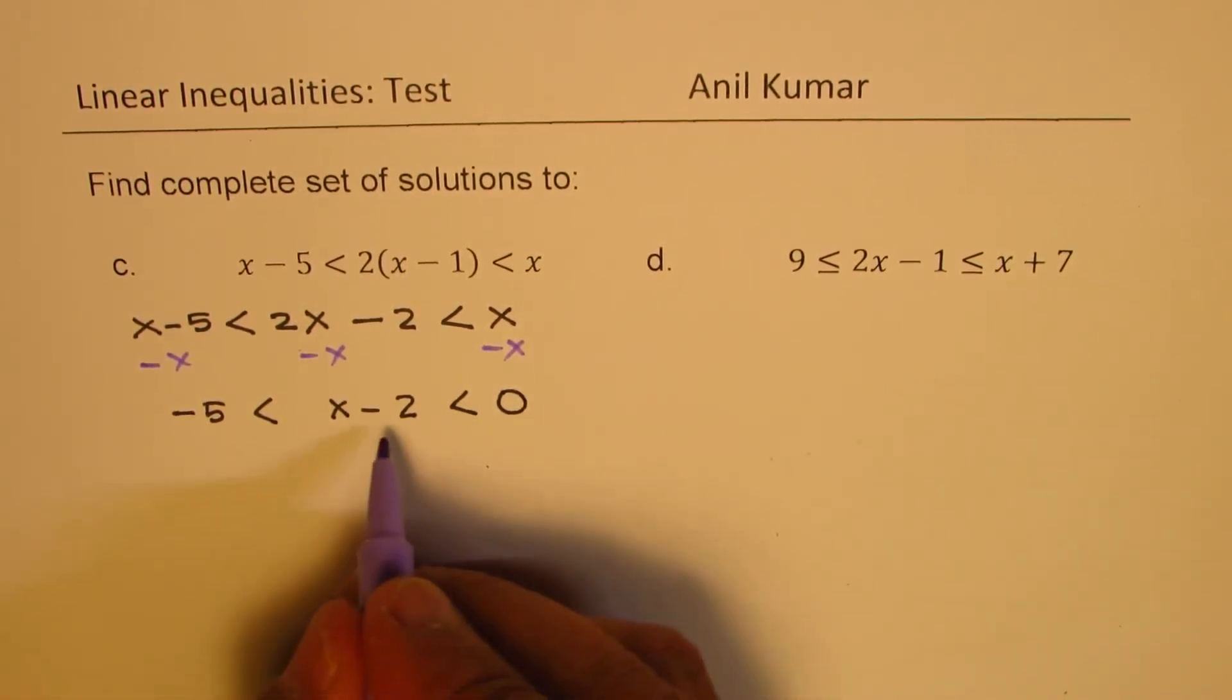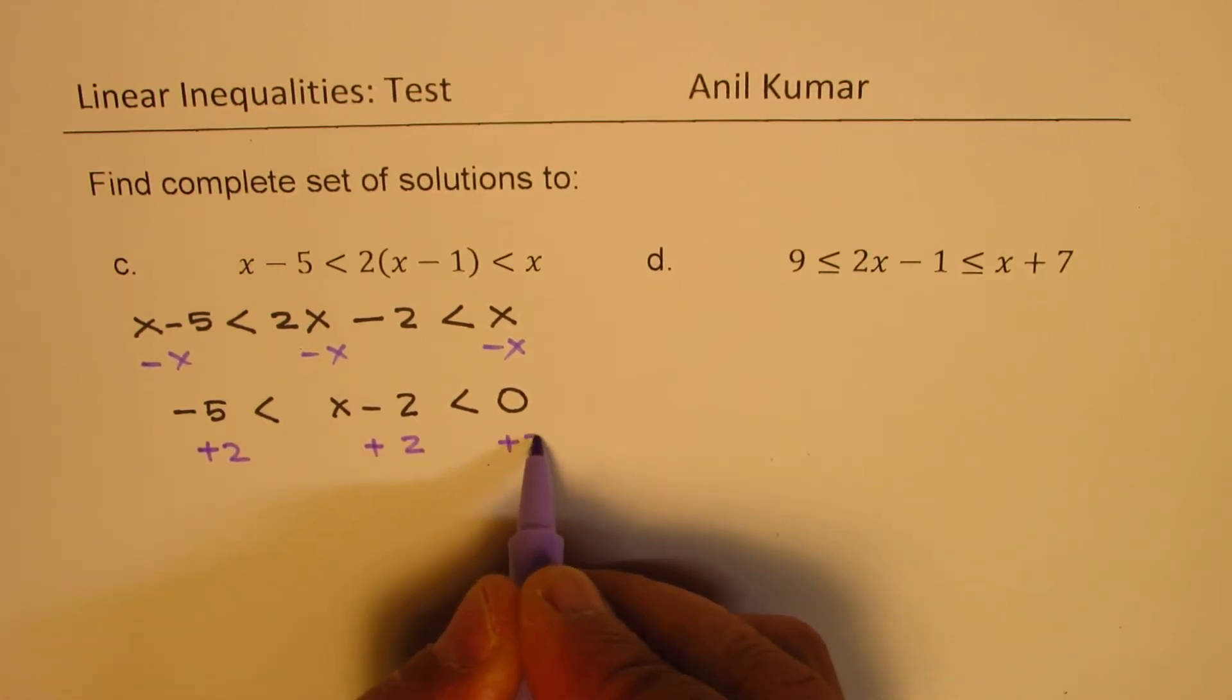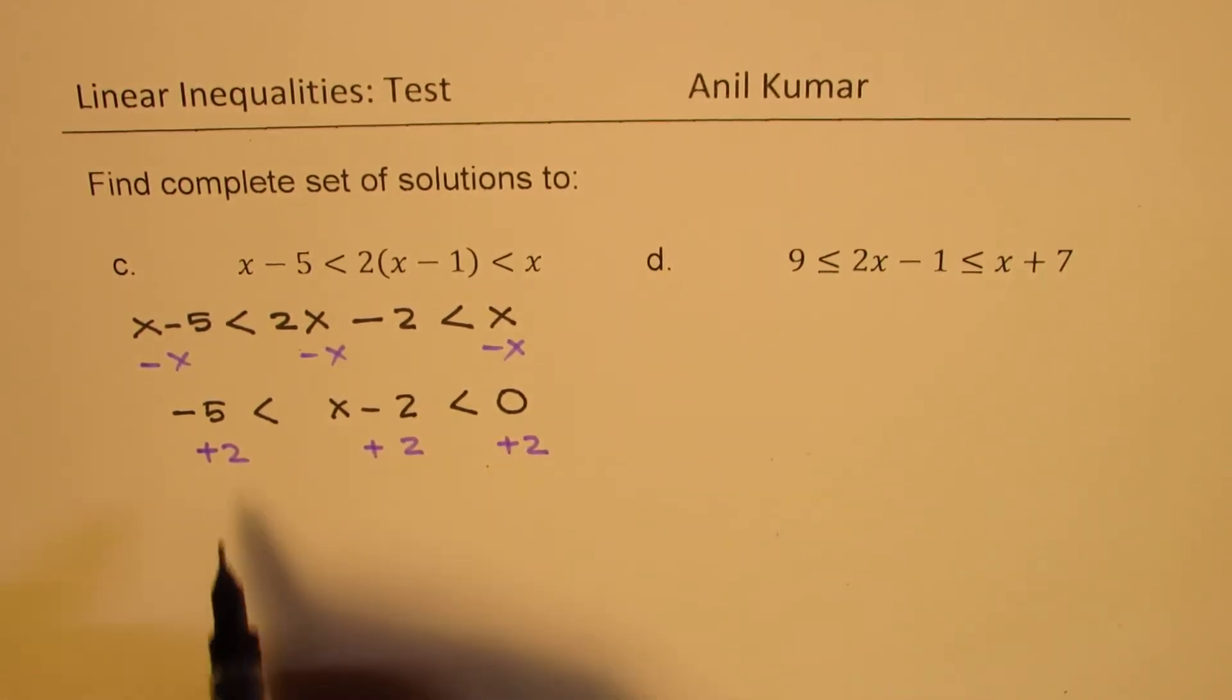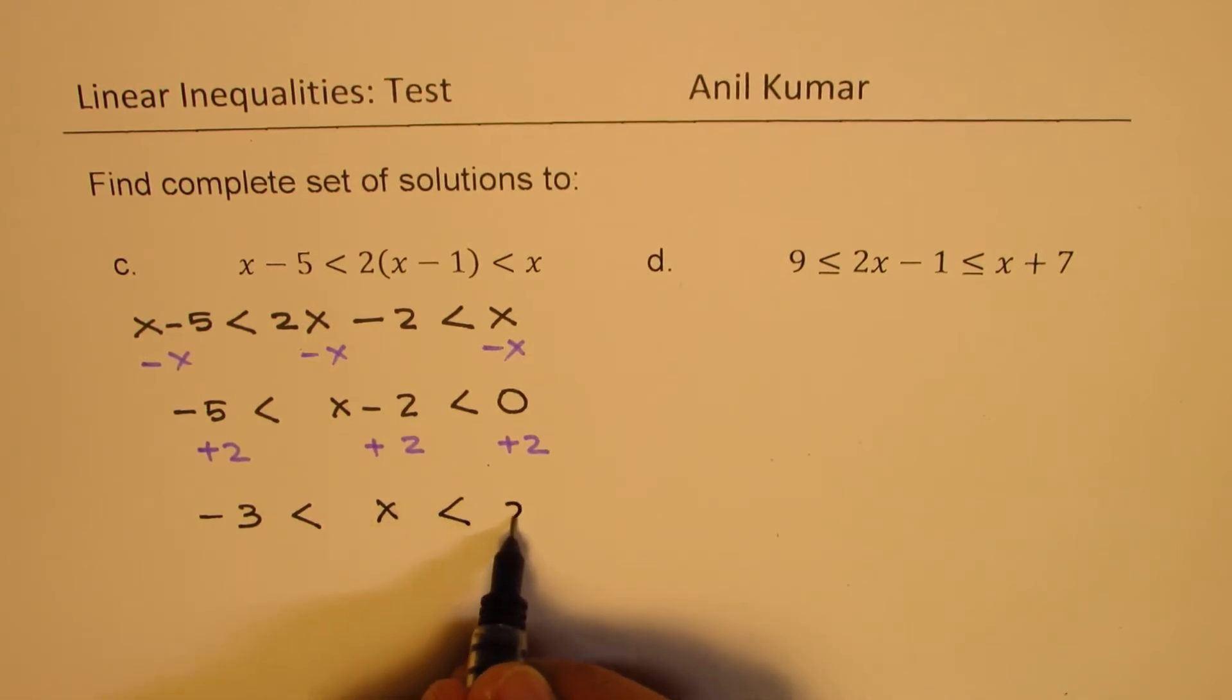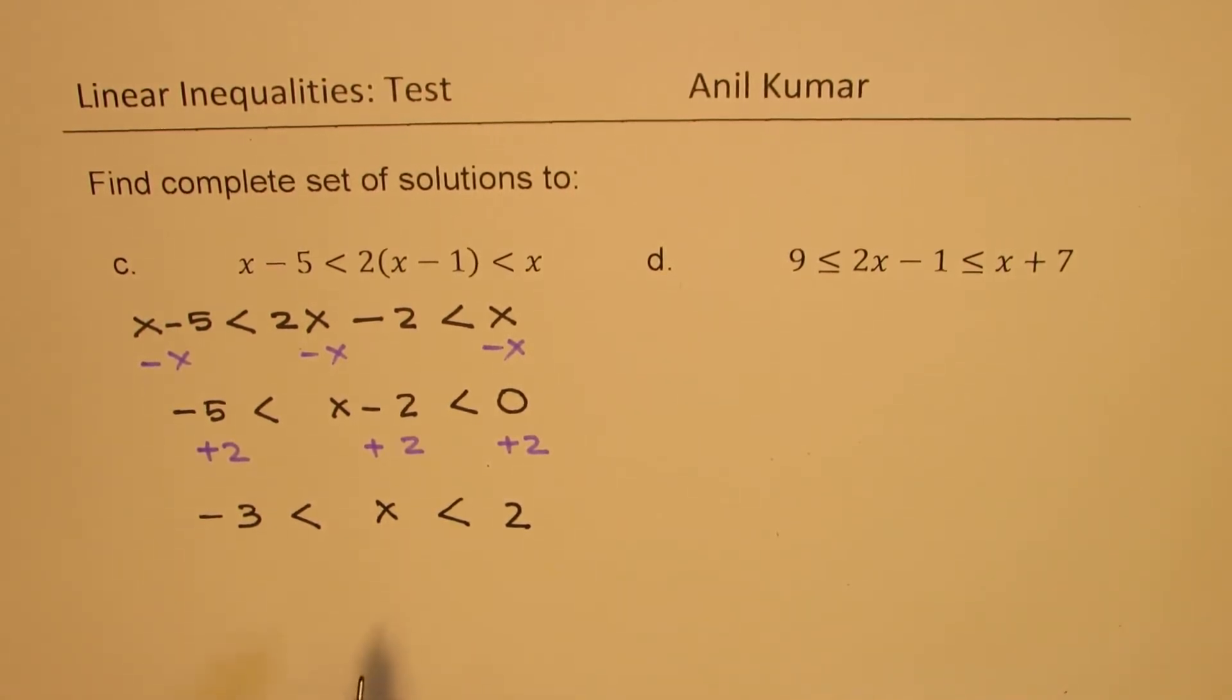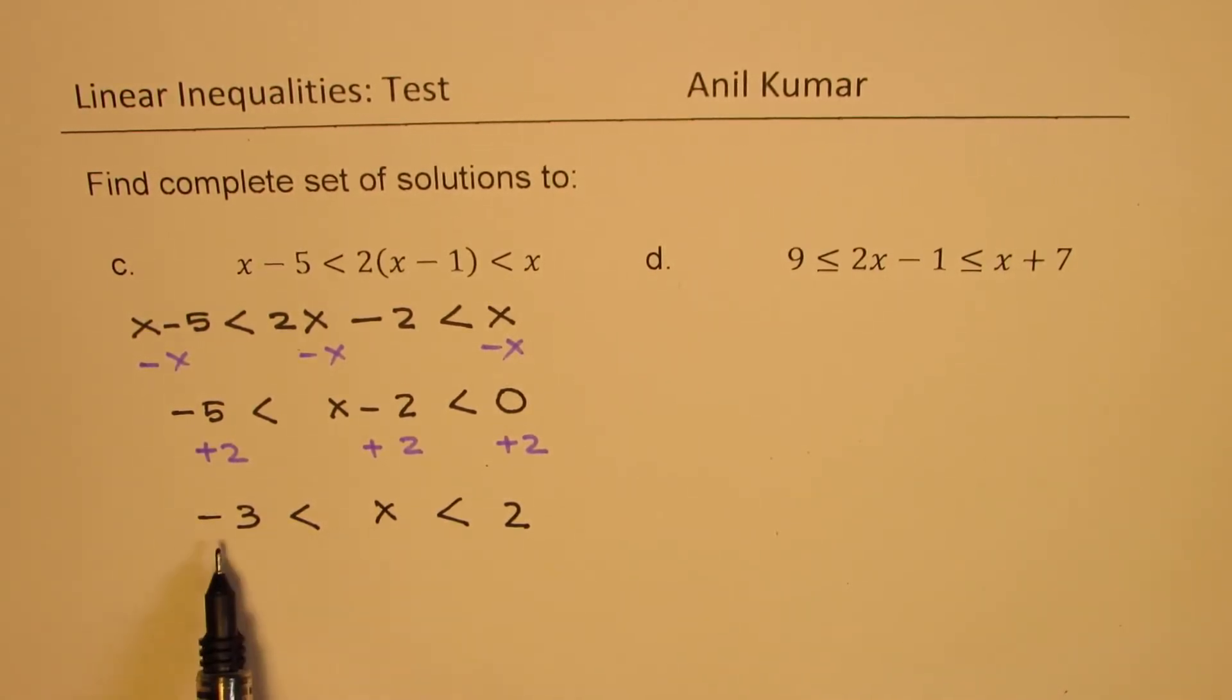And now we can add 2. So once you do that you get your solution which is minus 5 plus 2 is minus 3, x minus 2 plus 2 is x, and here we get 2. So we get our solution that is x is greater than minus 3 but less than 2.